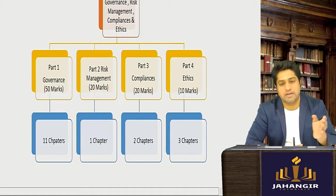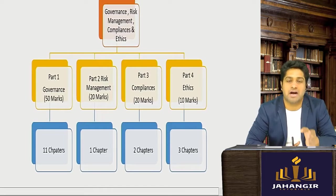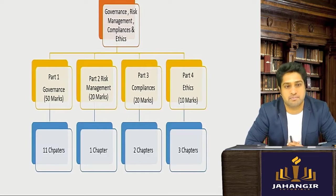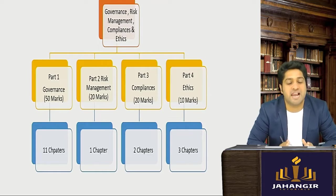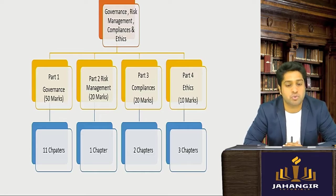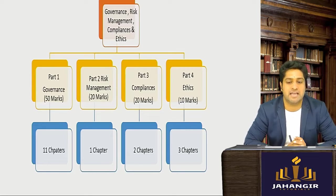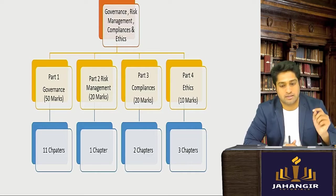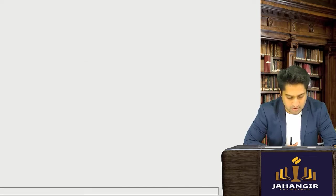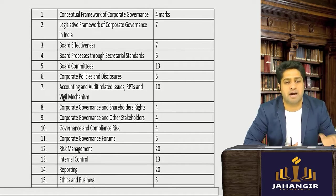The very first subject is corporate governance. This subject is divided into four parts, and the marks allocation has already been given by the Institute. Part one has 11 chapters and comes for around 50 marks. Part two comes for around 20 marks and has only one chapter. Part three — compliance — is for 20 marks with two chapters, and ethics is three chapters for 10 marks.